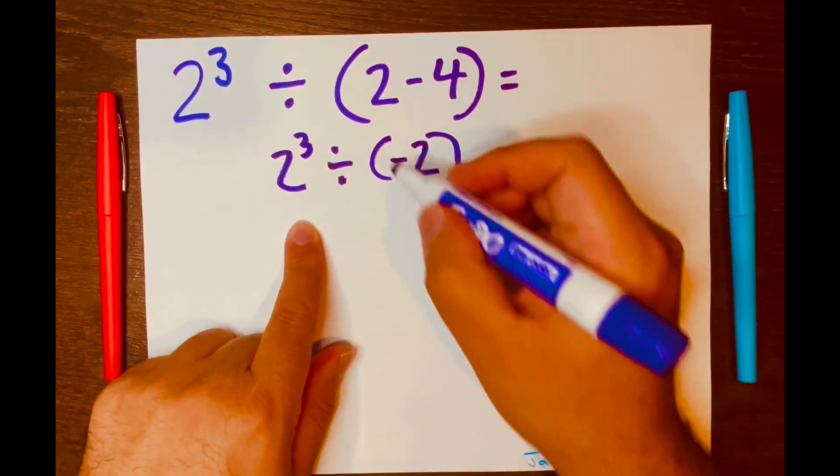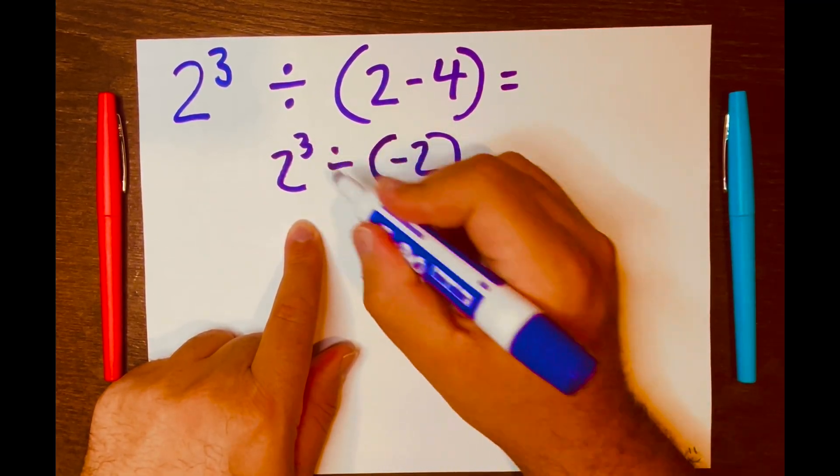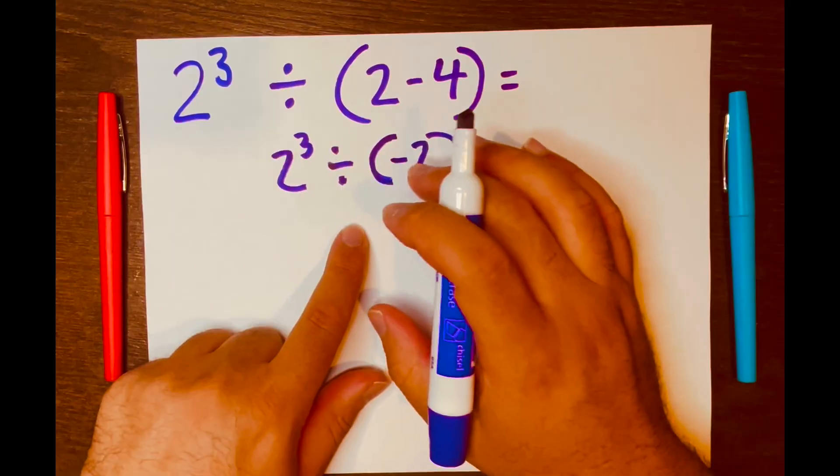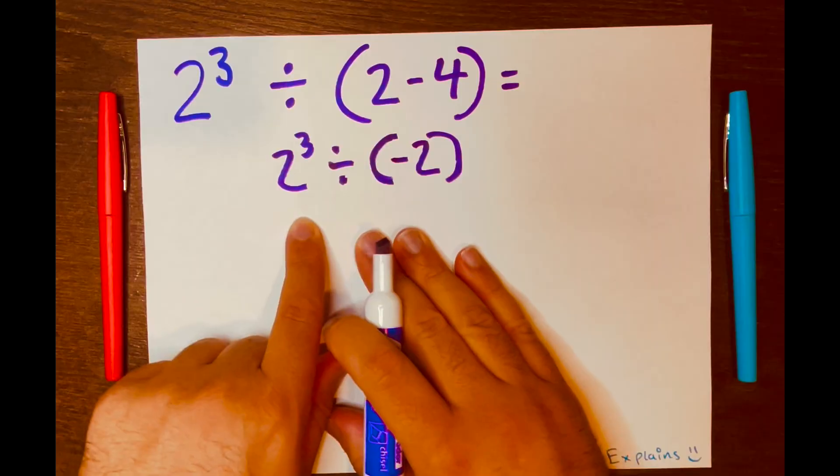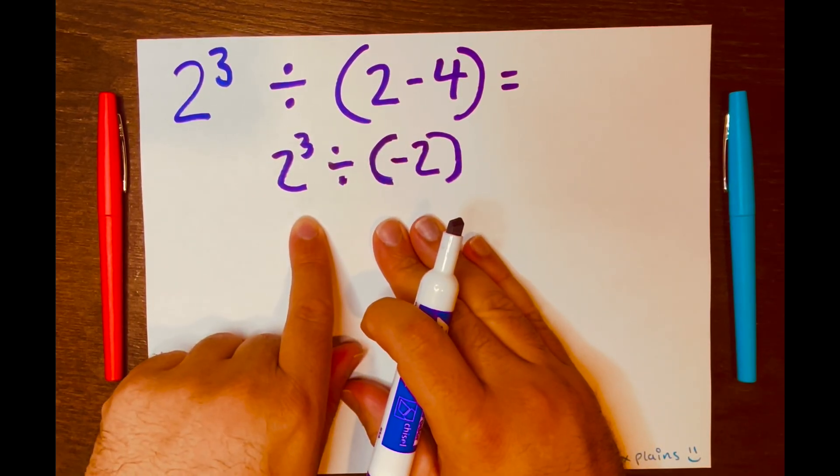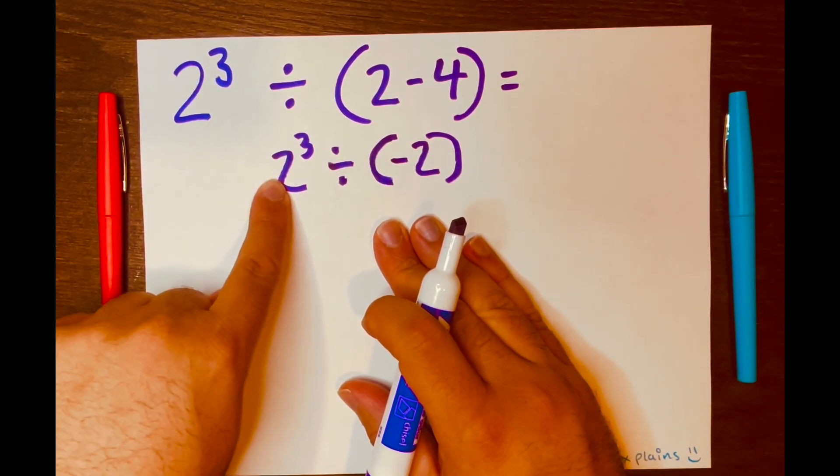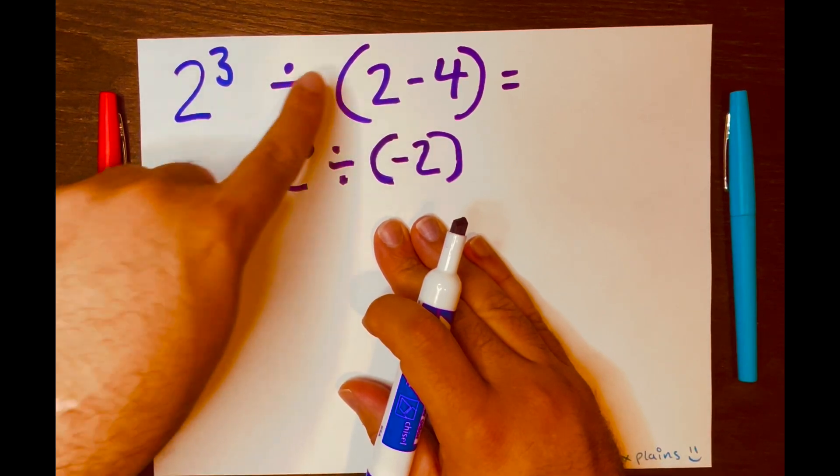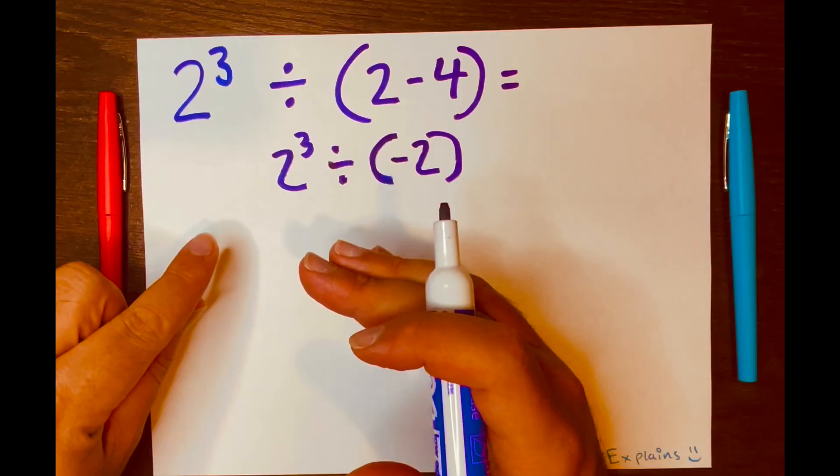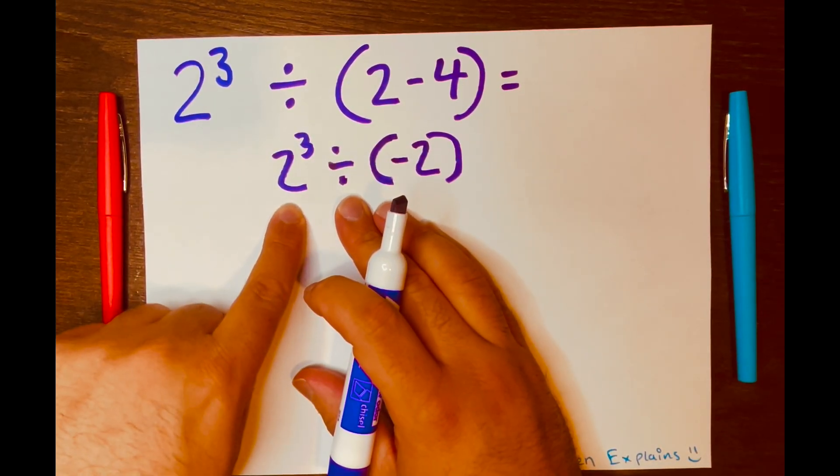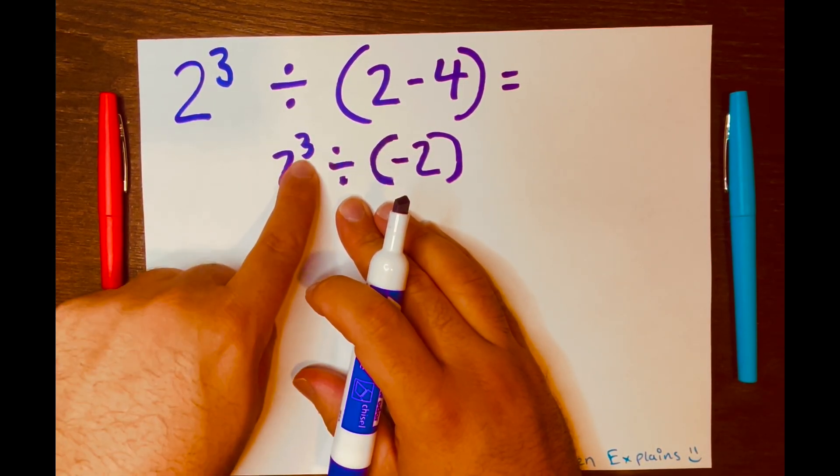Now we have 2 to the power of 3 divided by negative 2 inside parentheses. Now, according to PEMDAS, you will tackle the exponents next. So first it was parentheses, now it's exponents. So how do you solve 2 to the power of 3?